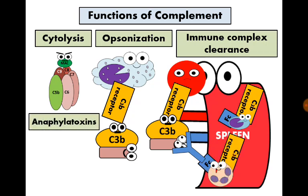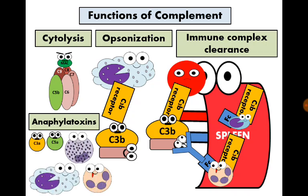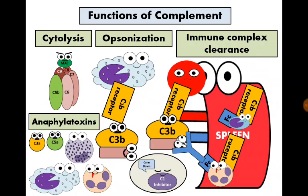Lastly, do you remember the small molecules C3A and C5A? They are called anaphylotoxins, as they mediate anaphylactic reactions, stimulating chemotaxis of phagocytes and degranulation of basophils. We also have a regulatory compound in serum called the C1 inhibitor, which helps regulate the complement system's effects.